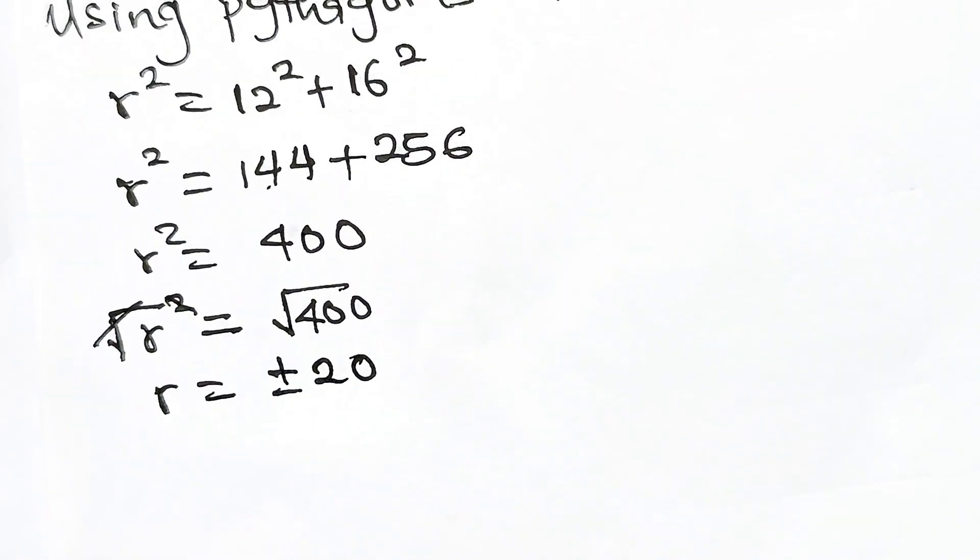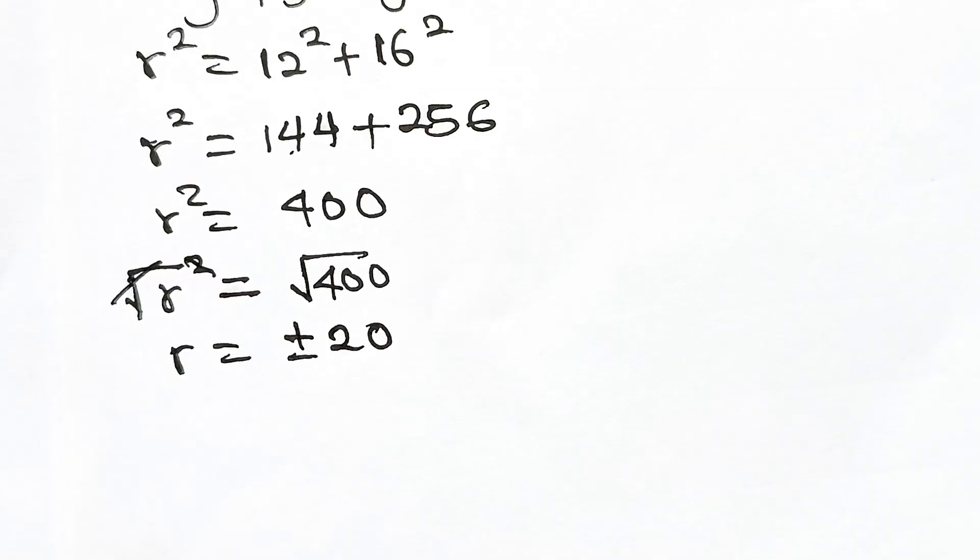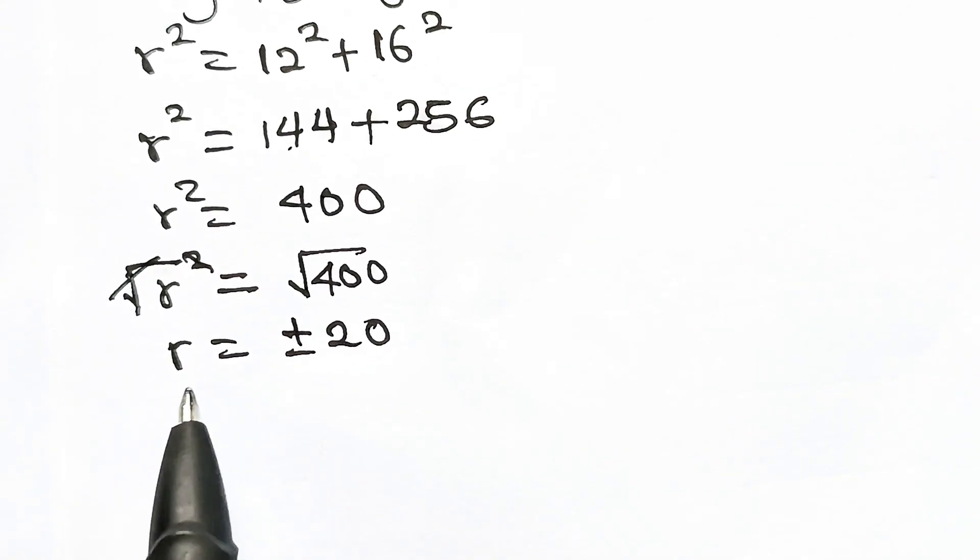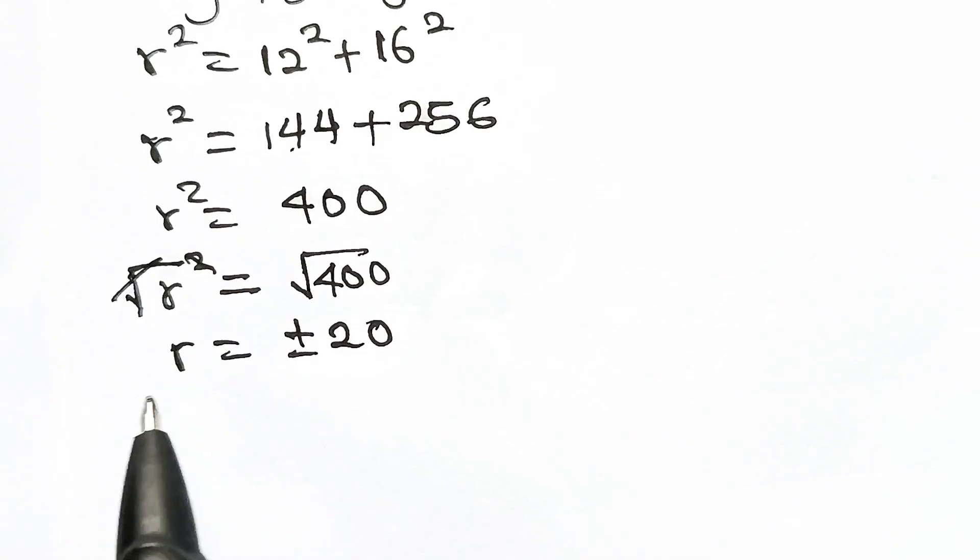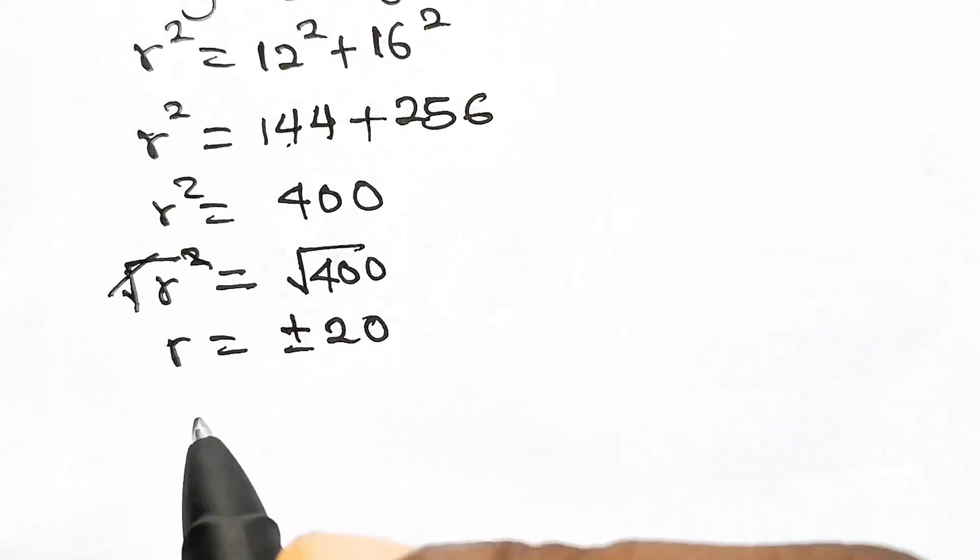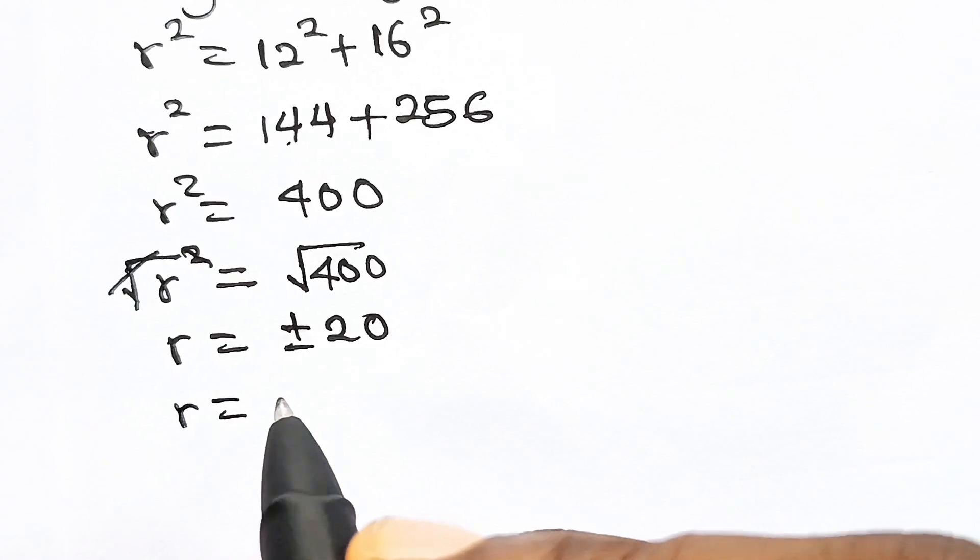Now we are going to take +20. The reason is because we are talking about radius, which is a physical length we can see, and length cannot be negative. So r = 20 meters.